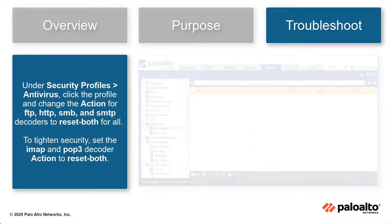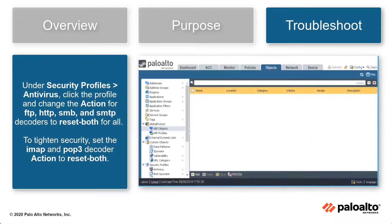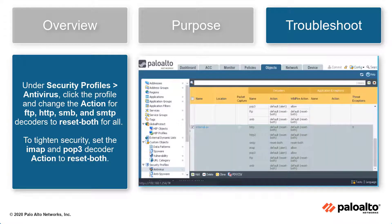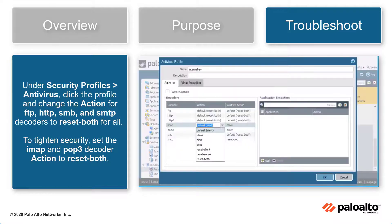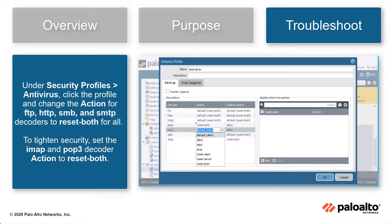Under Security Profiles – Antivirus, click the profile and change the action for FTP, HTTP, SMB, and SMTP decoders to Reset Both for all. To tighten security even more, set the IMAP and POP3 decoders action to Reset Both as well.